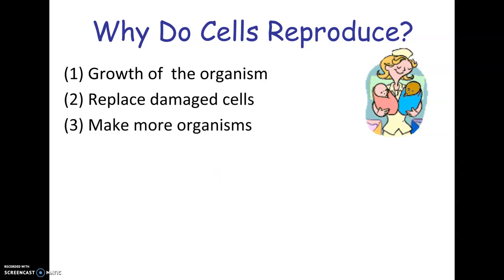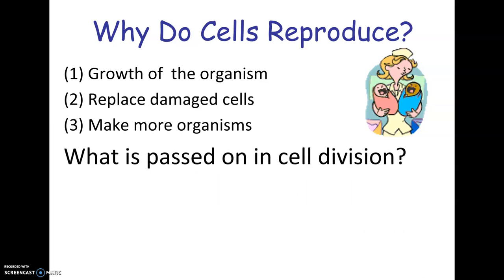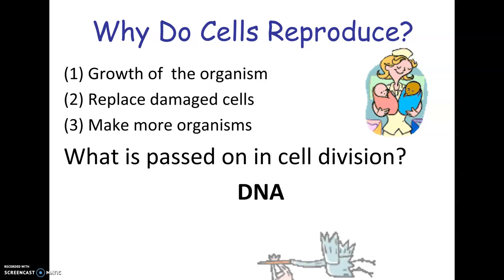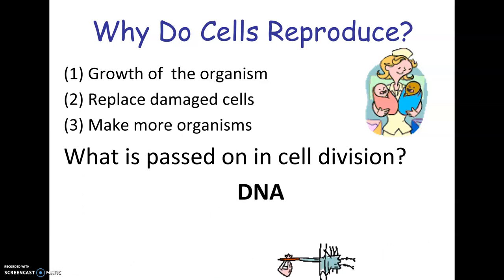And third, to make more organisms. Obviously we reproduce sexually, making more organisms, but also bacteria and some other organisms reproduce asexually by simply making exact copies of their cells. The one thing that's passed on when cells reproduce is the DNA or the genetic material. This is important because as long as a cell has DNA, it can make all those other things that it needs.